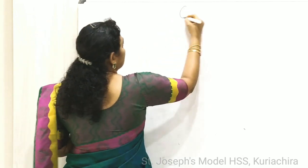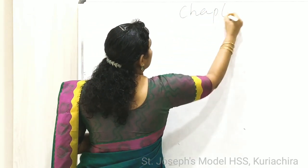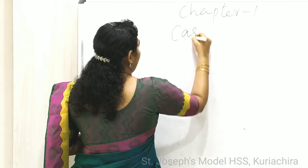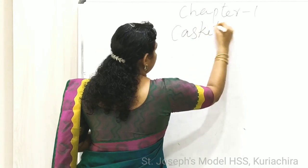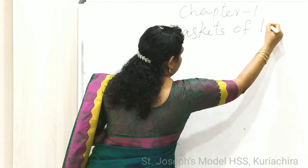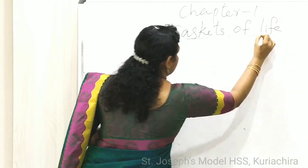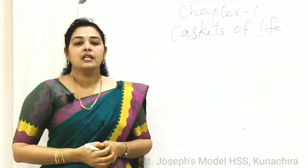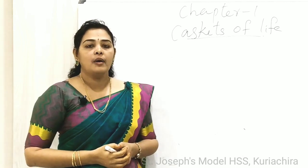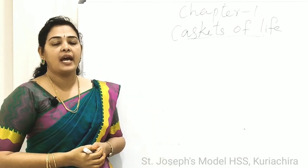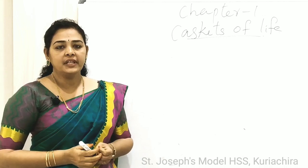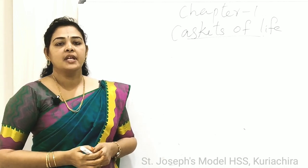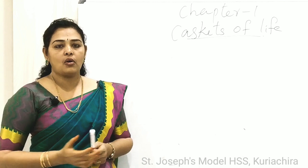Chapter one: Cascades of Life. There are so many kinds of plants and animals around us — big, small, different shapes, different colors and so on.